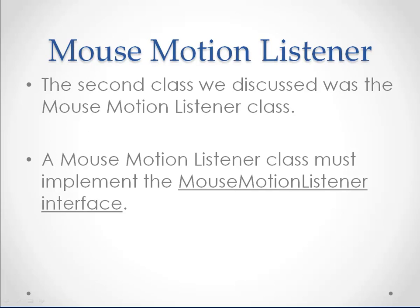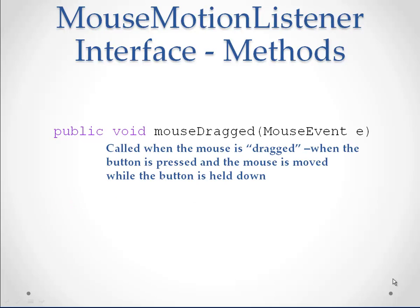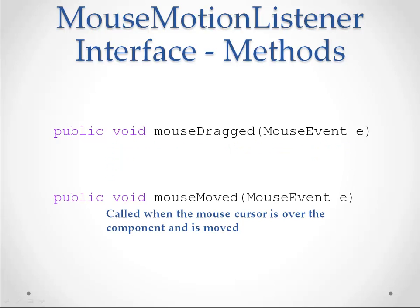The second class that we discussed was the Mouse Motion Listener class. The Mouse Motion Listener class must implement the Mouse Motion Listener interface. The methods required to override from the Mouse Motion Listener interface are public void Mouse Dragged and public void Mouse Moved, both accepting a mouse event called E. Mouse Dragged is called when the mouse is pressed and the mouse is moved while the button is held down. Mouse Moved is called when the mouse cursor is over the component and is moved.